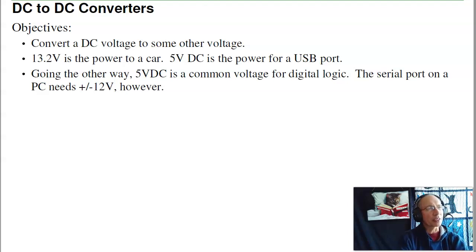The objective here is to convert a DC voltage from one voltage to another. Reasons you might want to do that: if you want to connect your car to your cell phone, the car's battery is 13.2 volts, your cell phone is 5 volts. I need a way to step down 13.2 volts down to 5 volts. There's also a way to go up. I want to go from 5 volts DC to 12 volts. The reason being is the microprocessor cell phone is 5 volts DC, that's TTL logic. The serial port on a PC needs plus minus 12 volts, so I might need a way to increase the voltage. This lecture looks at part of it, the first part, dropping the voltage. That's a buck converter.